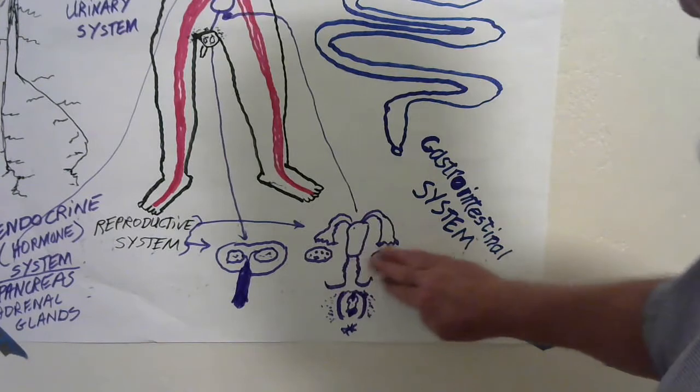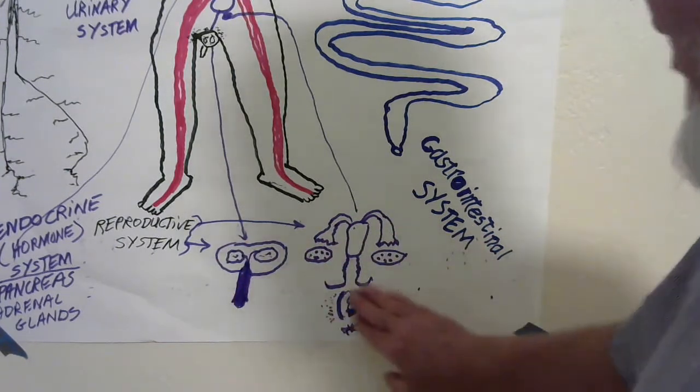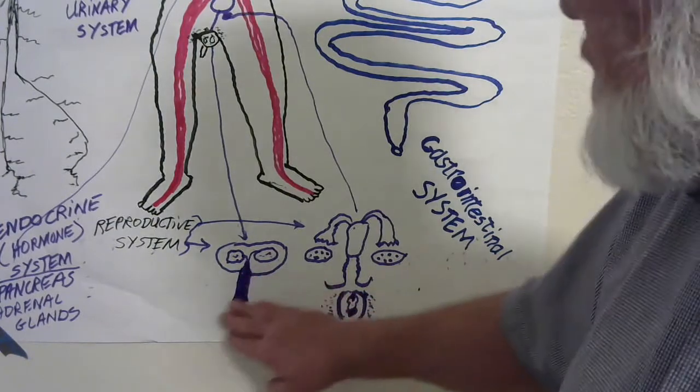These are the female reproductive organs inside. These are the external genitalia - the parts you see on the outside.